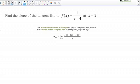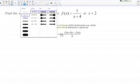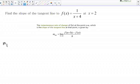Let's apply this definition to our function and point. The slope of the tangent line equals the limit as h goes to 0 of f. In this case, the point we're interested in is 2. This is going to be f of 2 plus h minus f of 2 all over h.